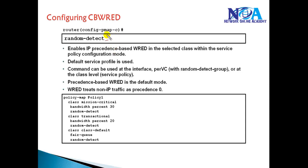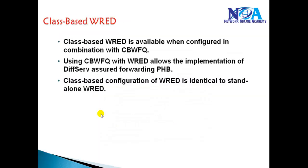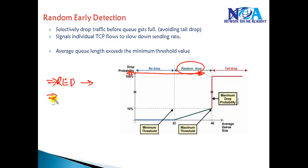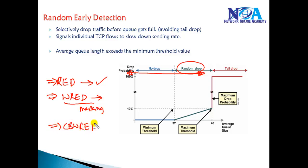Configuration-wise it is straightforward — you go into the policy map and simply specify 'random-detect'. As you can see here, for mission-critical traffic, random detect is enabled. The key difference between the three mechanisms is: basic RED simply drops packets randomly before the queue reaches the maximum limit, with no weight applied and all packets treated equally (large packets are more likely to be dropped). Weighted RED is a Cisco implementation where dropping is based on marking values or weight. Class-Based Weighted RED, used in today's networks, allows defining traffic in different class maps with specific minimum and maximum threshold values inside each class map.